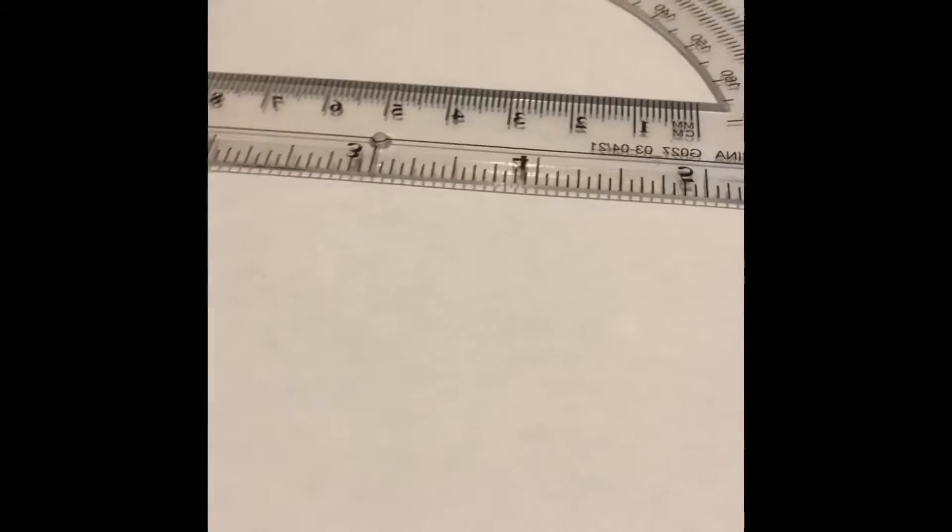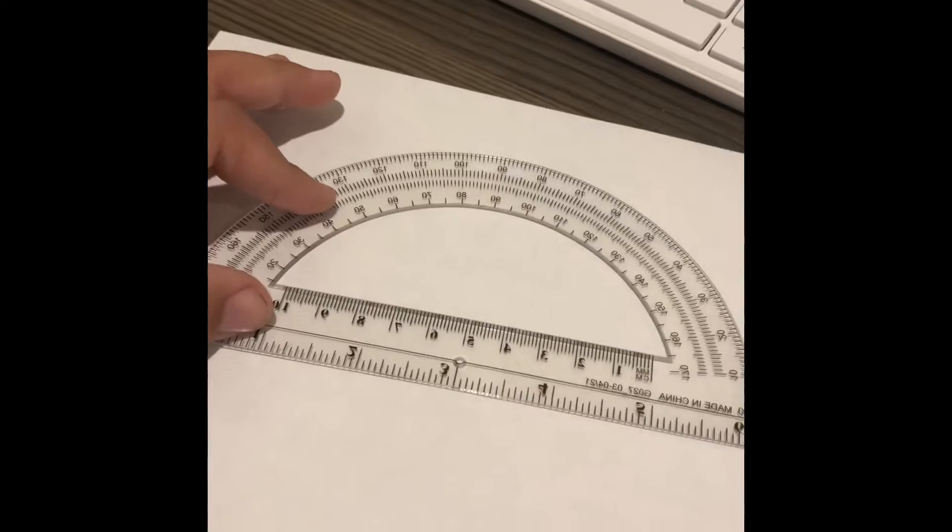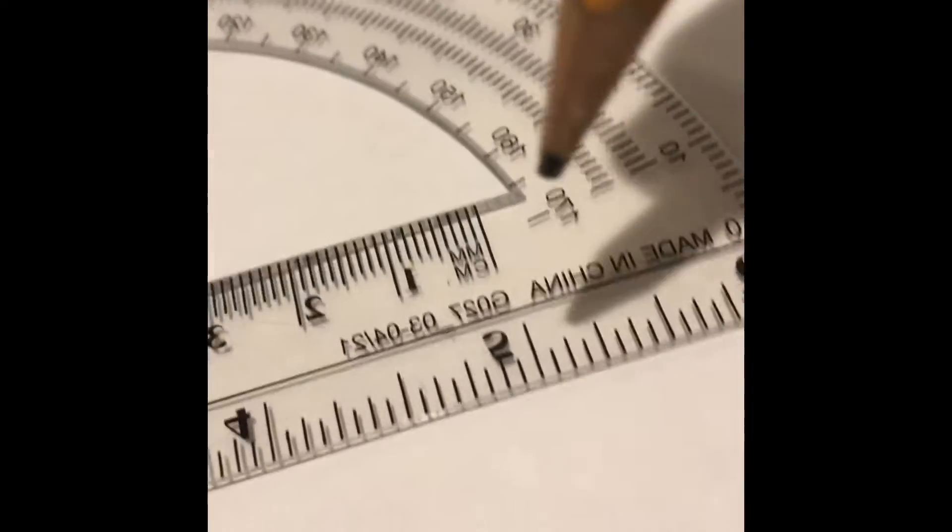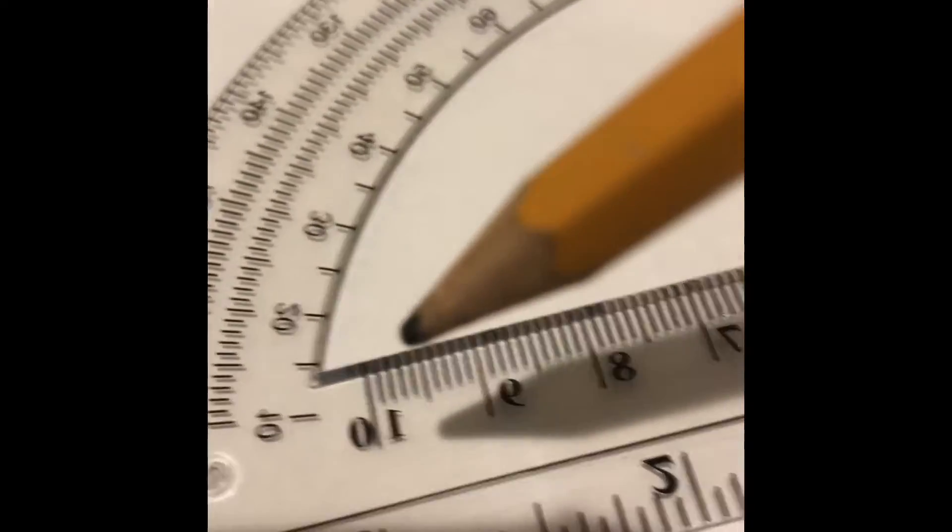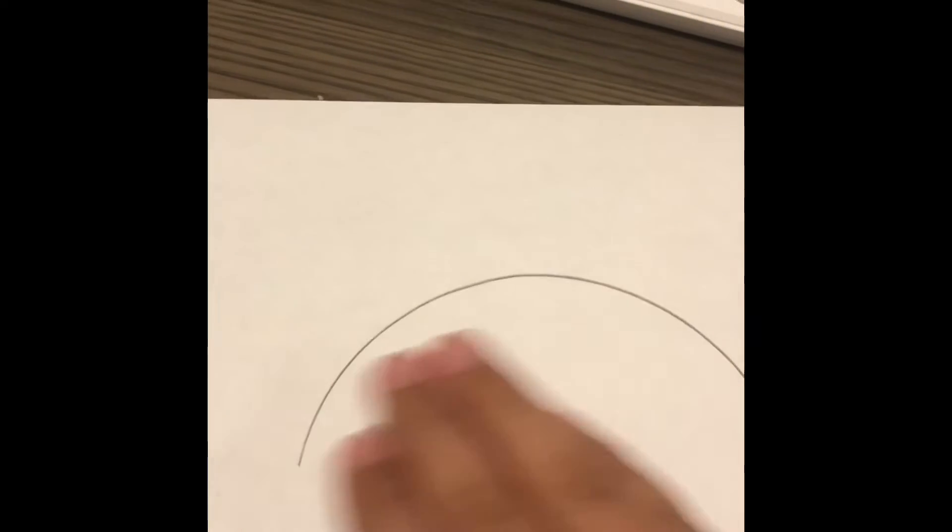Now let's get started. Put your protractor somewhere right here. You're gonna trace from here all the way to the other side, but not tracing the straight line under. I'll show you a representation. Now you have kind of like the outline of a rainbow, just poorly drawn.